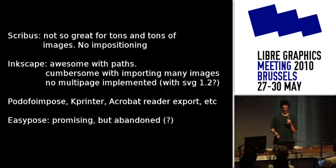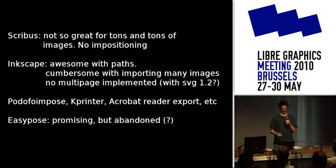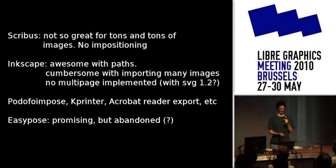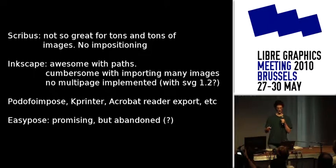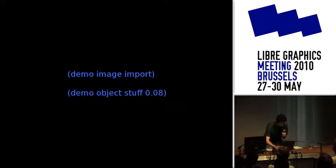When I was trying to find other software to do these things, Scribus was okay for text but not great for lots of images. Inkscape was awesome with paths — you can do tons of stuff with it, but importing multiple images like 40 or 100 pages of cartoons is not easy. Inkscape has no multi-page at the moment. EasyPose appeared a year or two ago and disappeared, but that way of doing imposition was awesome — you take one piece of paper, fold it, fold it again, and the computer keeps track of how pages will be arranged.